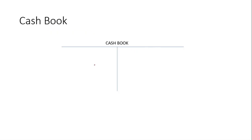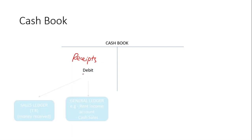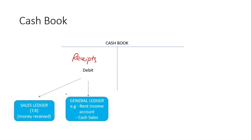For the Cash Book, on the left side we'll have a debit — it basically records money coming in, which is known as receipts. We could receive money by cash, bank transfer, or by cheque. This side relates to two ledgers: the Sales Ledger, where we receive money from our customers, and the General Ledger, where it could be receiving money from rent or cash sales.